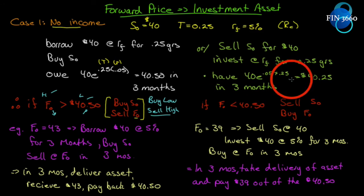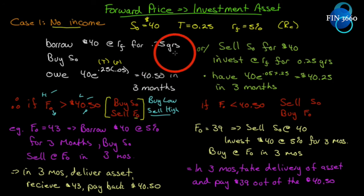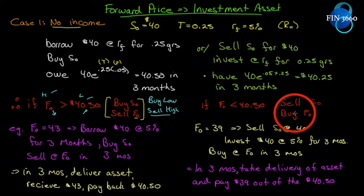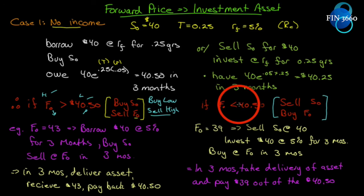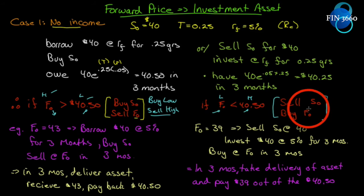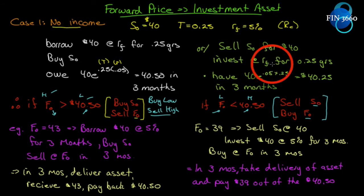We take that $40 and invest it at the risk-free rate for three months. $40 will grow to $40.50 — the same amount as the loan. One of our assumptions is that we can both borrow and lend at the risk-free rate. So if the futures price is less than $40.50, what's our high side and low side? $40.50 is the high side, so we buy low — we buy the futures contract — and sell high — we short the asset.